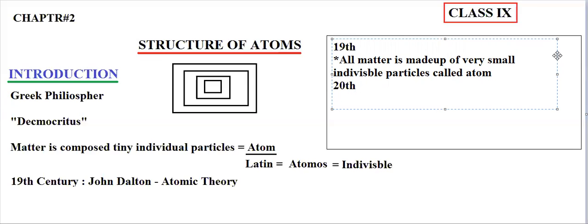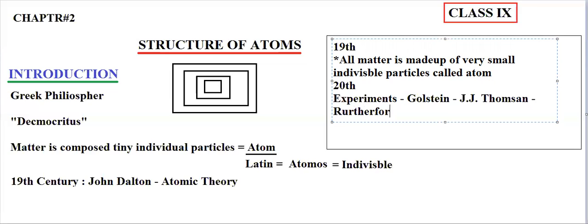we have different experiments performed. The experiments were performed by different scientists. I'll just write the names of the scientists. We will learn more about them. One's name is Goldstein. Another scientist is J.J. Thompson. And then we have Rutherford, and then Neil Bohr.